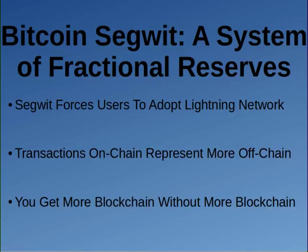Only Bitcoin Cash can say its blockchain represents all transactions that have ever been done. You get more blockchain using Bitcoin SegWit because it's a fractionally reserved blockchain — without actually having more blockchain. It's just like how fractional reserves in the banking system give you more loanable funds, but you don't actually have more loanable funds. It's sort of a magic trick, and it's sort of fraudulent unless the people involved know what's going on — and I don't think they really do.